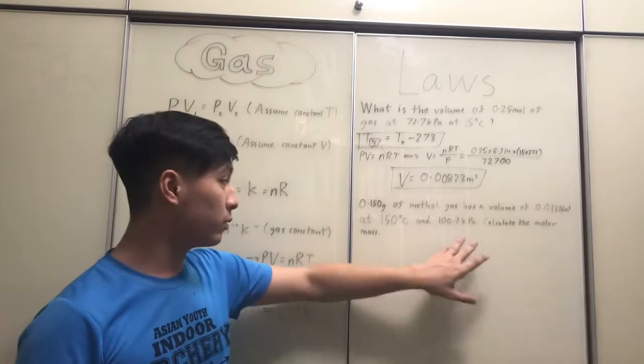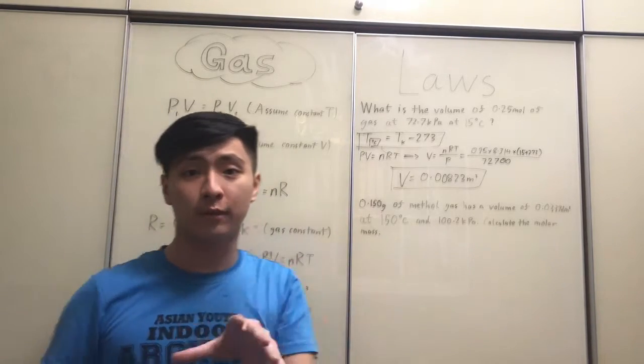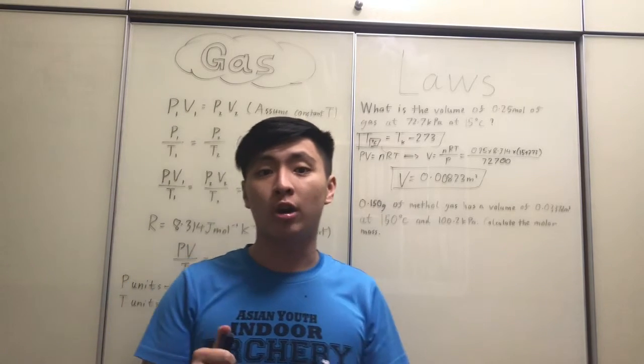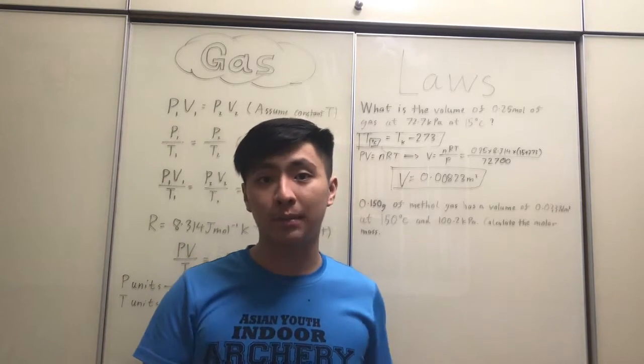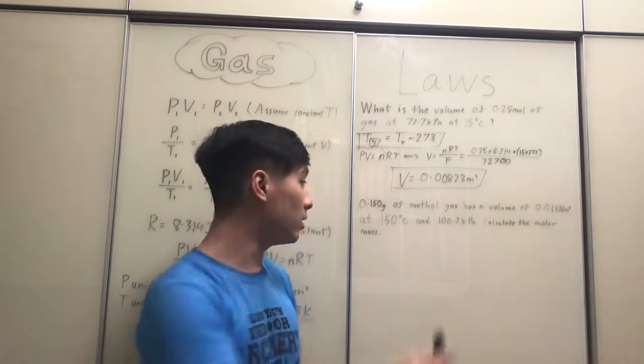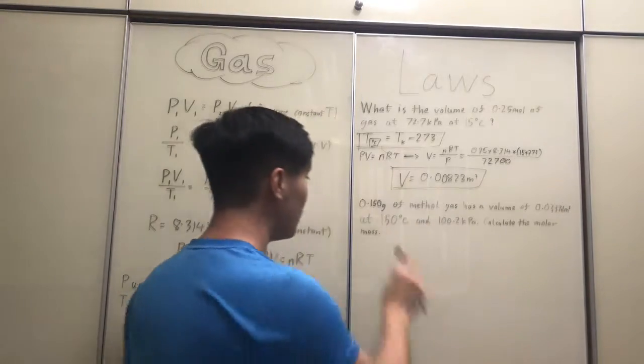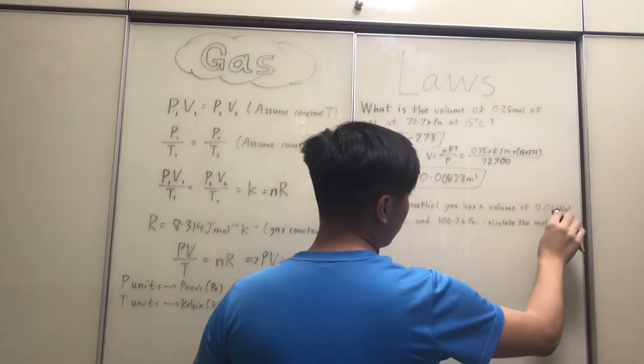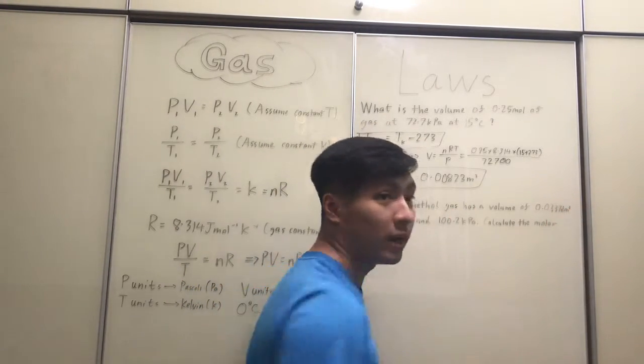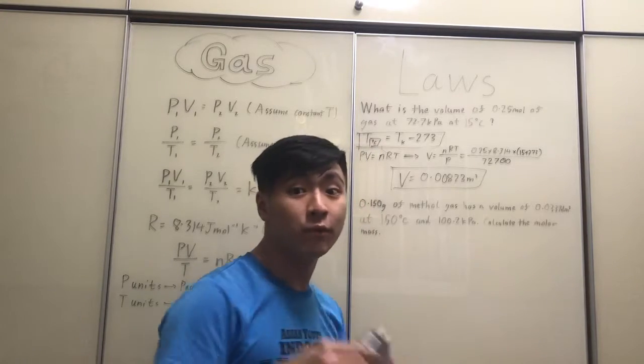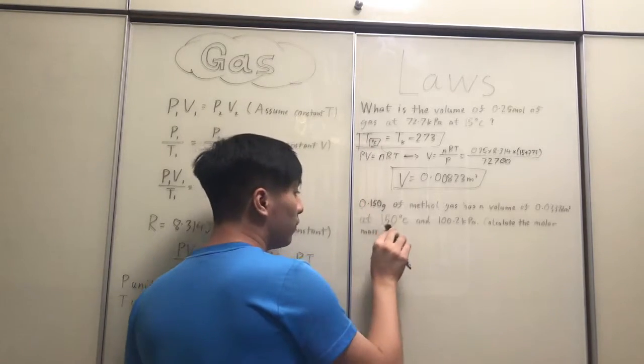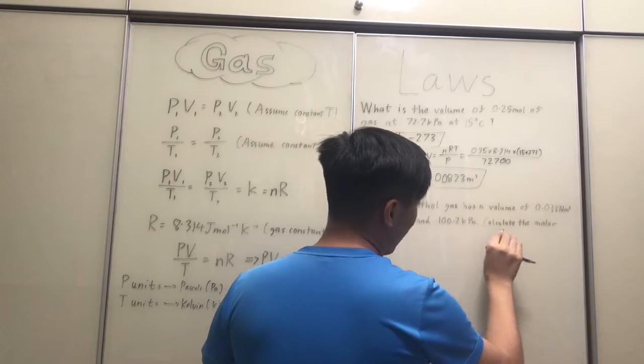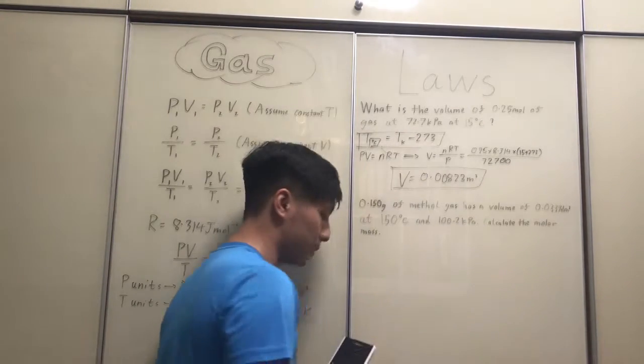Okay, so now we're going to move on to the next question, and this question might actually be a little familiar for you guys, because this question is actually the middle section of the empirical formula question that we've done in the last lecture. It's also on menthol gas. So, 0.150 grams of menthol gas has a volume of 0.0337 DMQ, note DMQ, which means we have to convert it later, at 150 degrees Celsius and 100.2 kilopascals, calculate the molar mass of the substance.